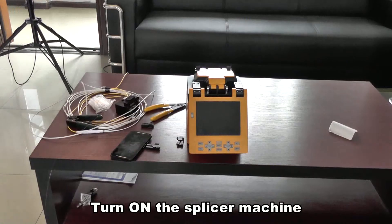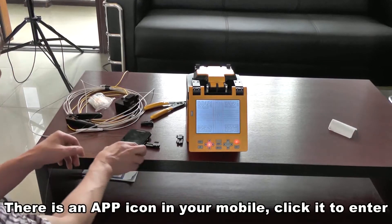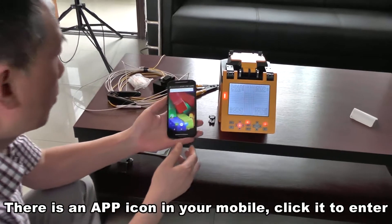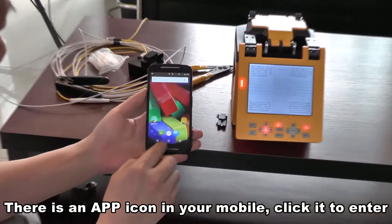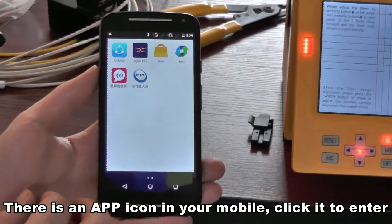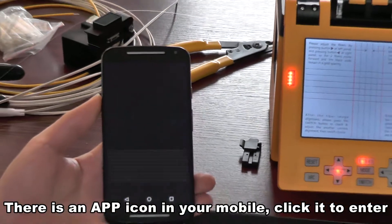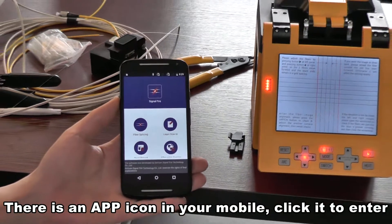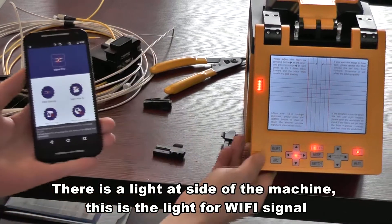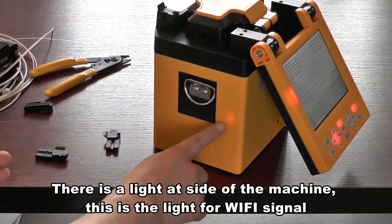Turn on the splicer machine. There is an app icon in your mobile. Click it to enter. There is a light outside of the machine. This is the light for WiFi signal.